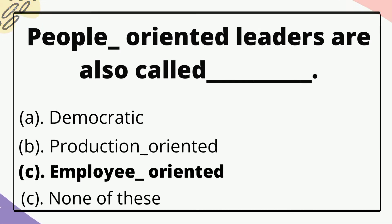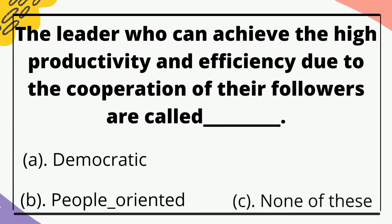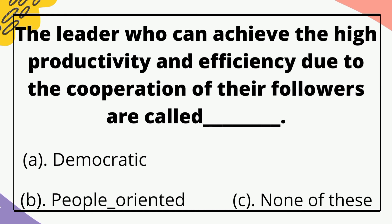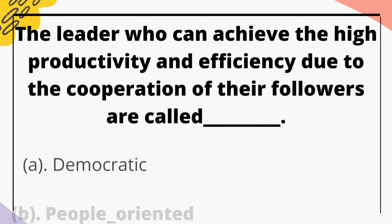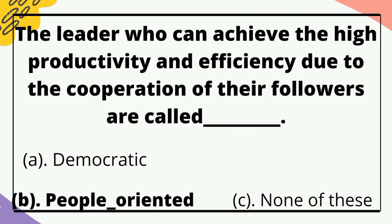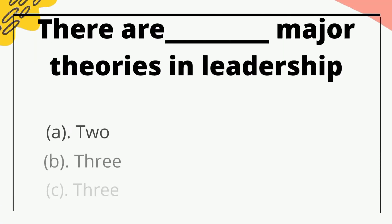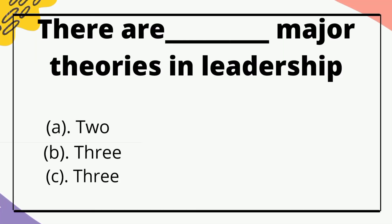People oriented leaders are also called — the correct option is employee oriented. The leaders who can achieve high productivity and efficiency due to the cooperation of their followers are called — the correct option is people oriented.